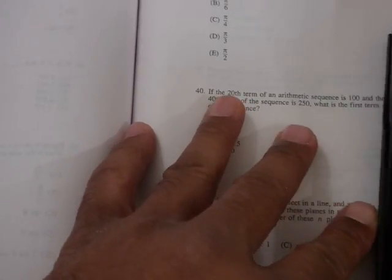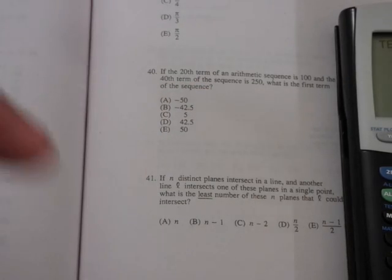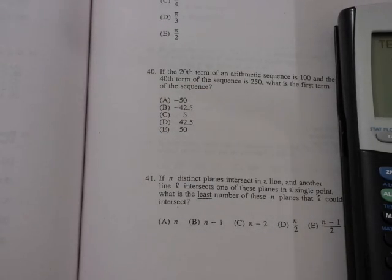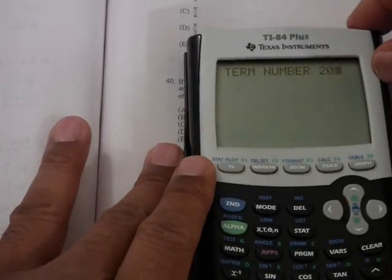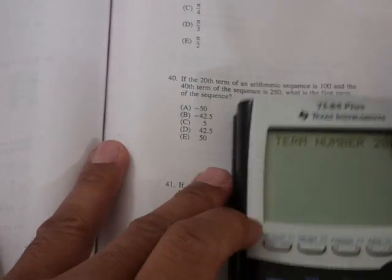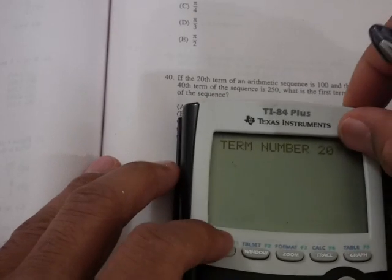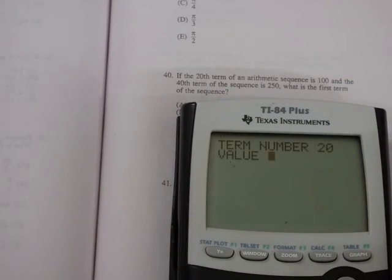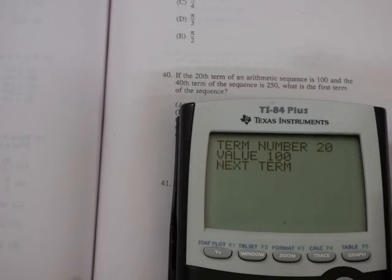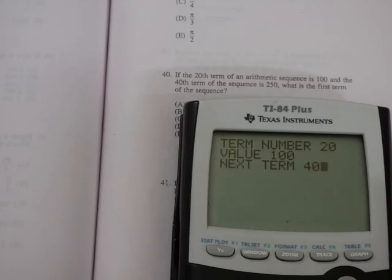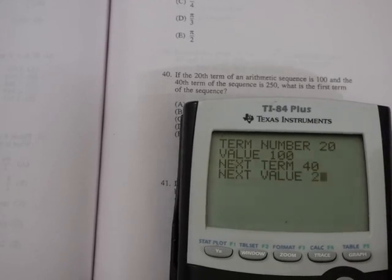We're going to be prompted again for the terms that we know. In this particular case, we know two terms: the 20th term and the 40th term. So those are the two that we're going to use. The 20th term is 100. So press Enter, and then for the value, we're going to enter 100. And then for the next term, the next term that we know is the 40th term, and the value for that one is 250.